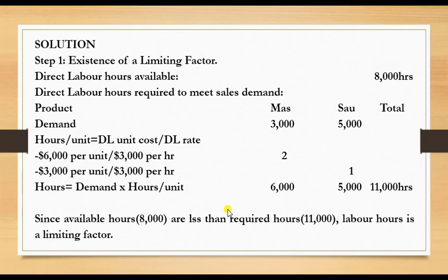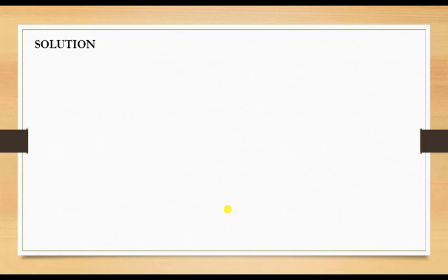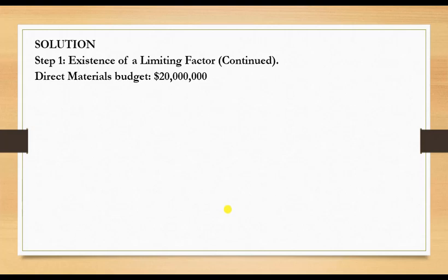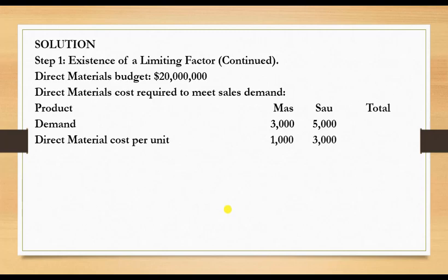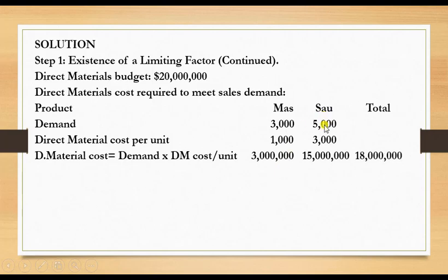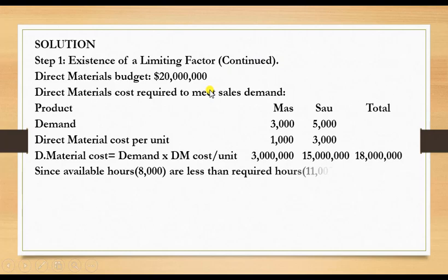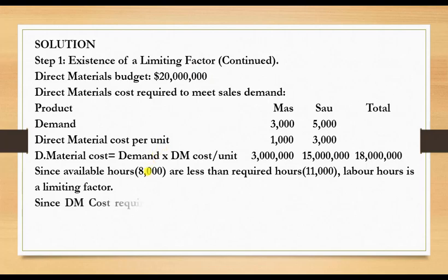Since the question also gives a direct material budget limited to $20,000,000, we must test it as well. Direct material costs required to meet sales demand: for Mass, direct material cost per unit is $1,000 × 3,000 units = $3,000,000; for Sal, $3,000 per unit × 5,000 units = $15,000,000 — giving a total of $18,000,000 required. Since $18,000,000 is less than the $20,000,000 budget available, direct materials is not a limiting factor. We conclude that the limiting factor is direct labor hours.